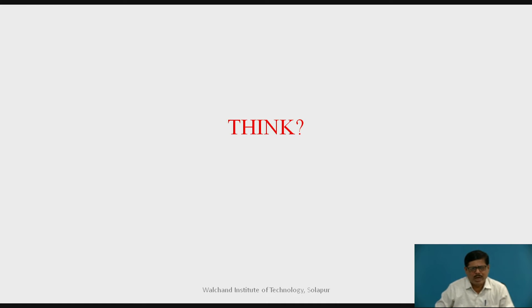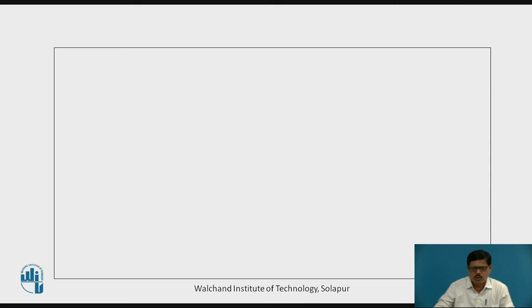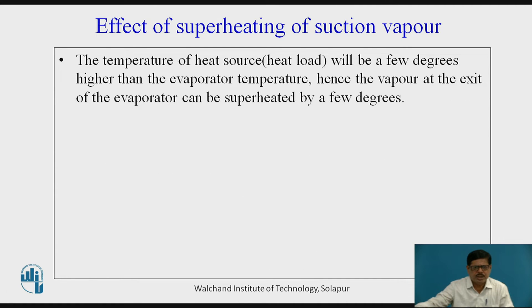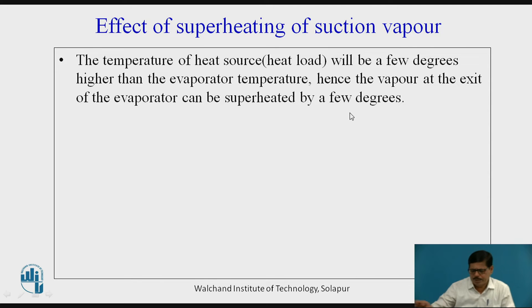Now let us think about why the suction vapor will get superheated. The reason is that whenever we consider the temperature of the heat source or heat load in the evaporator, it will always be a few degrees higher than the evaporator temperature, and that is why heat transfer will occur. When we are maintaining a particular evaporator temperature, the temperature of the heat load or heat source in the evaporator will always be higher. Hence the vapor at the exit of the evaporator — at the suction of the compressor — can be superheated by a few degrees.